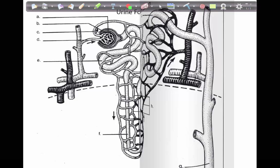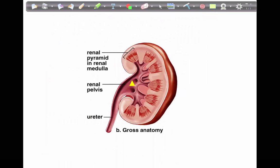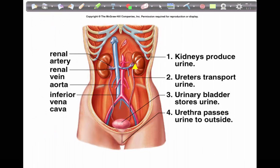The urine will then pass out of the renal pelvis and into the ureters. From the ureters, the urine will be transported into the urinary bladder, where it will be temporarily stored before passing out of the urethra.